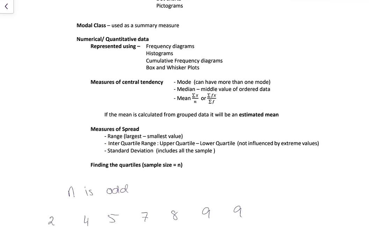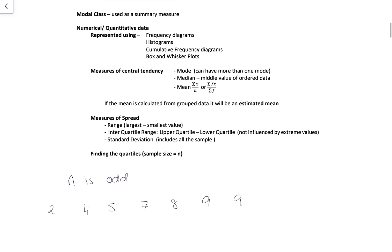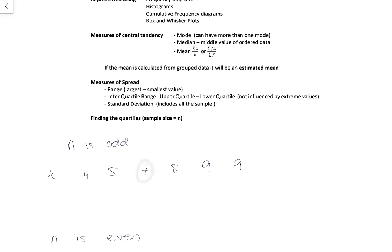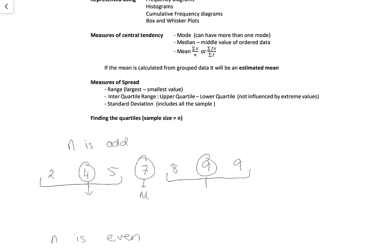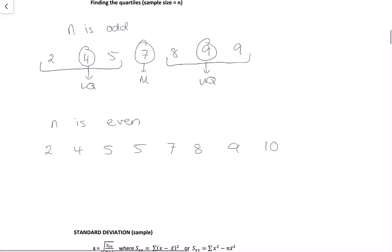Measures of spread: range, interquartile range, and standard deviation. To find the quartiles — if n is odd, find the median by putting data in order, then split into two halves and find the median of each upper and lower side. Those are your upper and lower quartiles. If n is even, find the median — in this case it may not be a data point — split data in half and find the median of both sides, giving quartiles of, for example, 4.5 and 8.5.